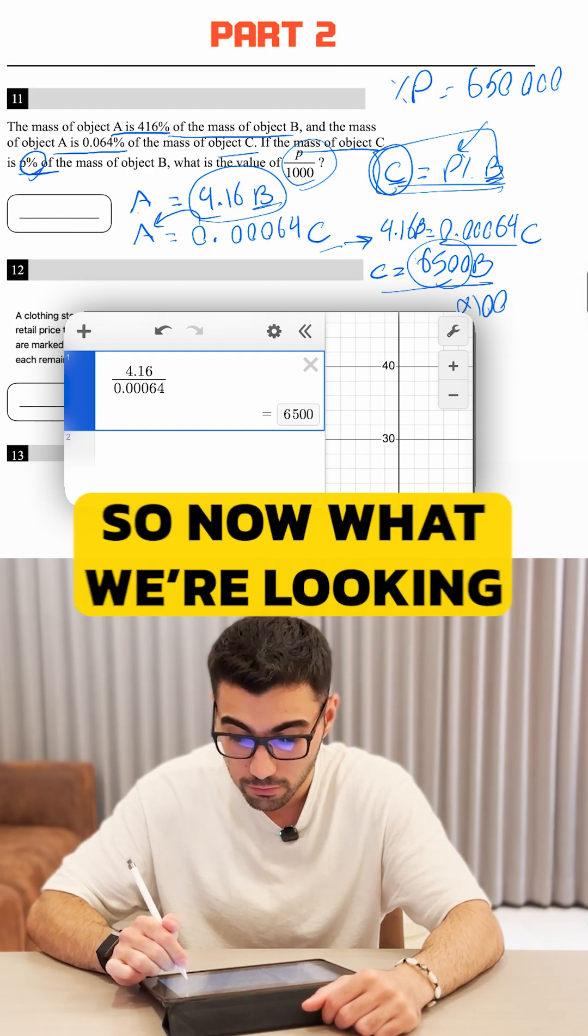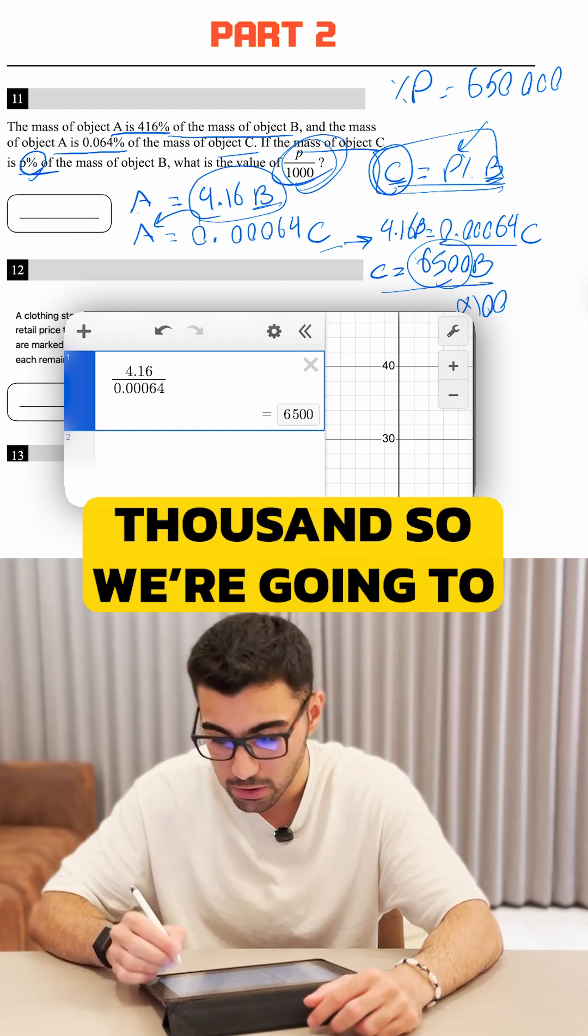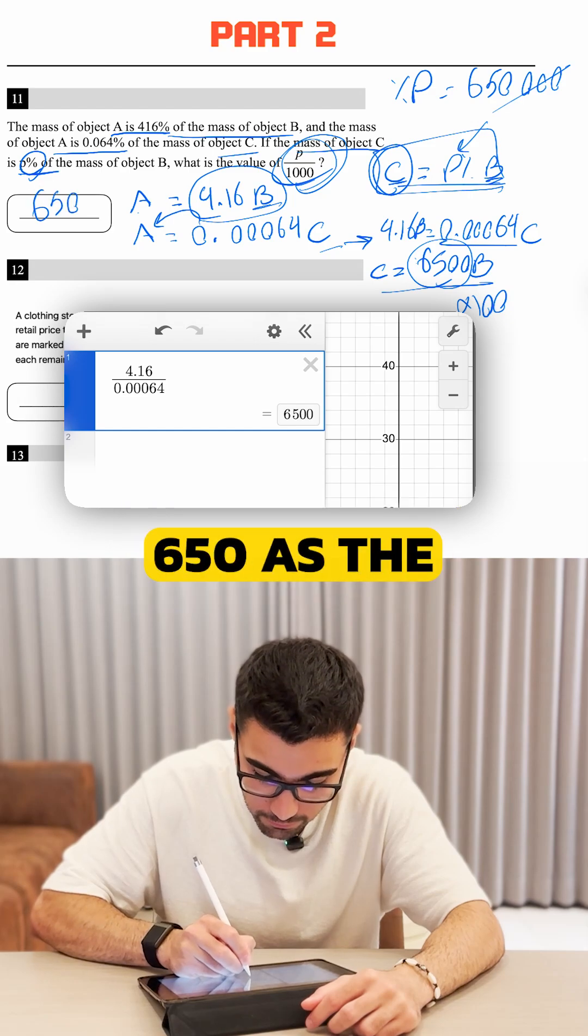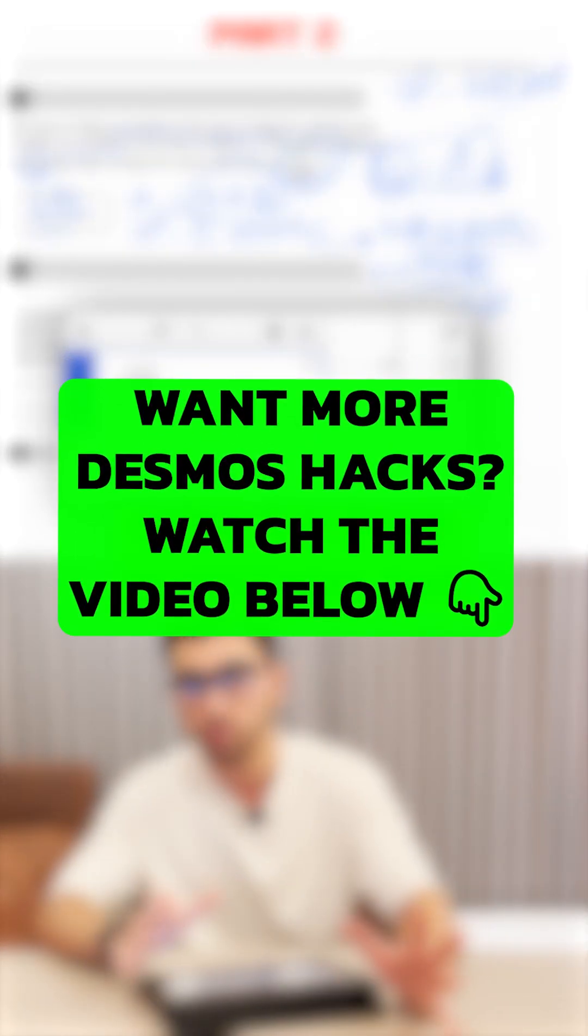So now what we're looking for is P over a thousand. So we're going to divide this by a thousand. The three zeros go, so the answer is going to be 650 as the final answer. This is how we do it.